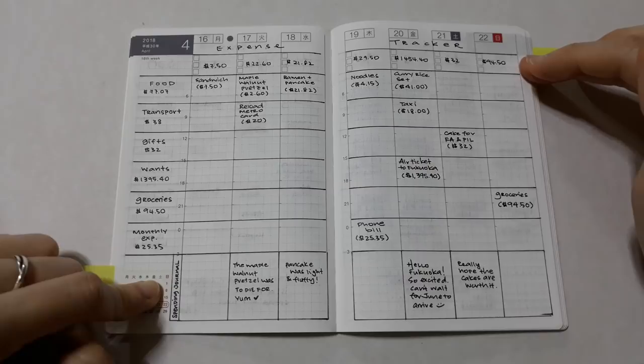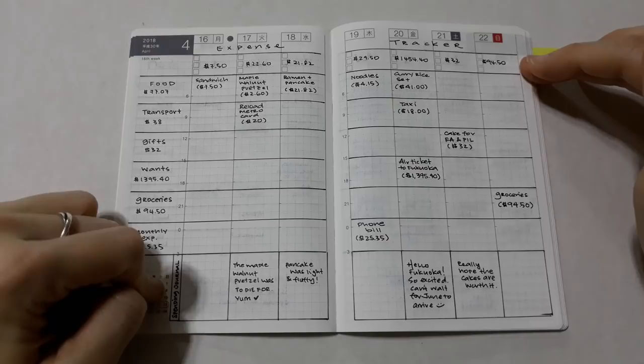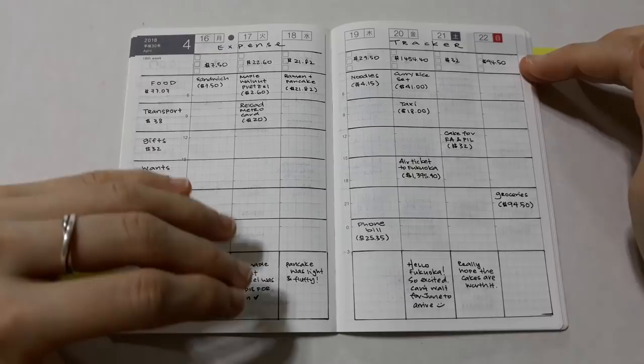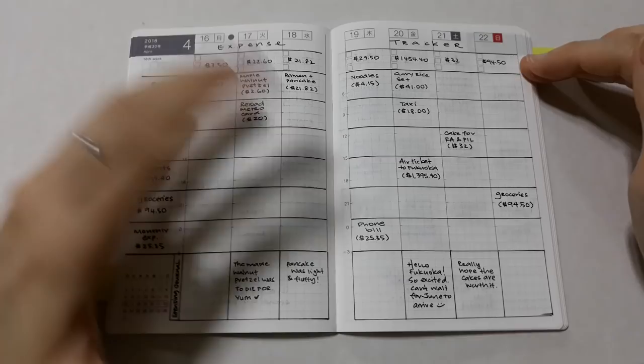I've also included a spending log or journal at the bottom of the spread. This is where I write things like one thing that I spent on that made me very happy, or one thing that I spent on that made me not so happy. This way I can identify and cut back on things that don't make me so happy and then spend more on those that do.